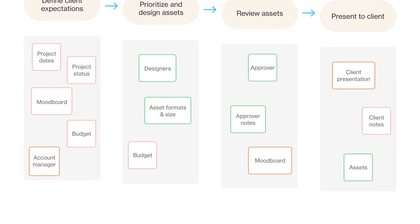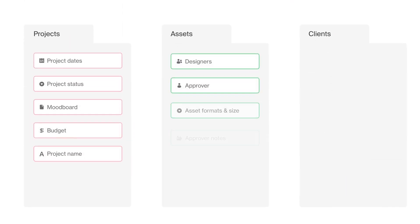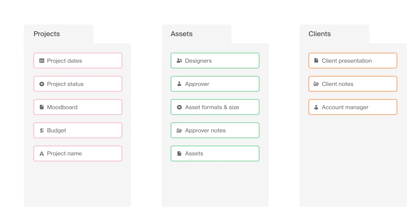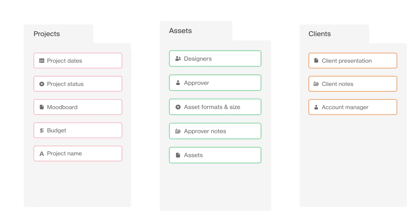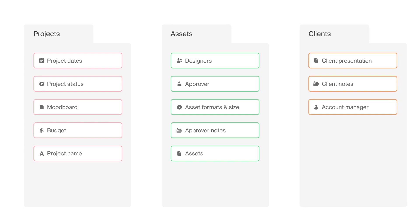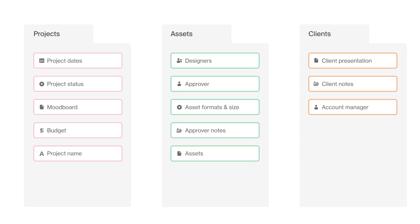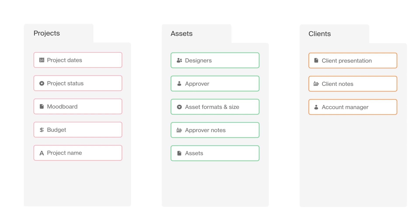In this case, you can see that a web agency's information falls under three distinct lists: projects, assets, and clients. This will mean you will have three tables when you build your base in Airtable. The information you require for each project, asset, or client will become fields in your tables so you can track all project details, asset status, specs, and client information in one place.